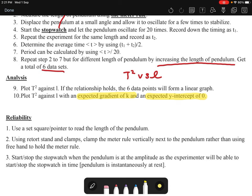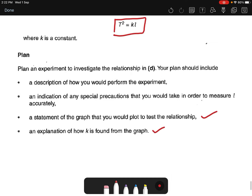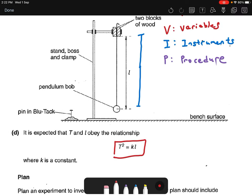Last but not least, we try to put in reliability - means that how I can ensure that the experiment that I'm doing will have minimal sources of error. So this is to minimize error. Why should I put in this? Because if you look at the planning question, the second point - an indication of special precaution that will take to measure l accurately. So they want us to measure l as accurately as possible.